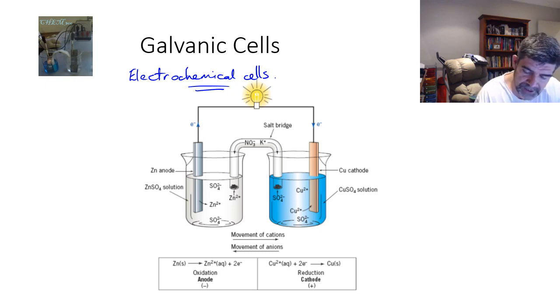The first one is that the light globe, which is the loading device which is being used in this particular cell, could be replaced with a voltmeter. And if we replace it with a voltmeter, then it will tell us what the voltage or potential difference is across this particular cell. That is the difference between the electrode potentials of the zinc half cell and the copper half cell.